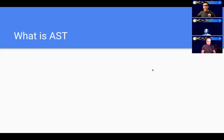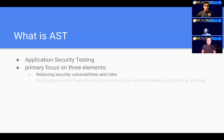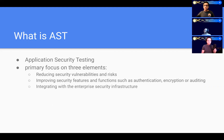Let's start with what is AST. AST stands for Application Security Testing, and it primarily focuses on three different elements. One is to reduce the security vulnerabilities and risks. Two, to improve security functions and features such as authentication, encryption, as well as auditing. And the third one is to integrate with the enterprise security infrastructure that may already be present either in the cloud or on-premises.